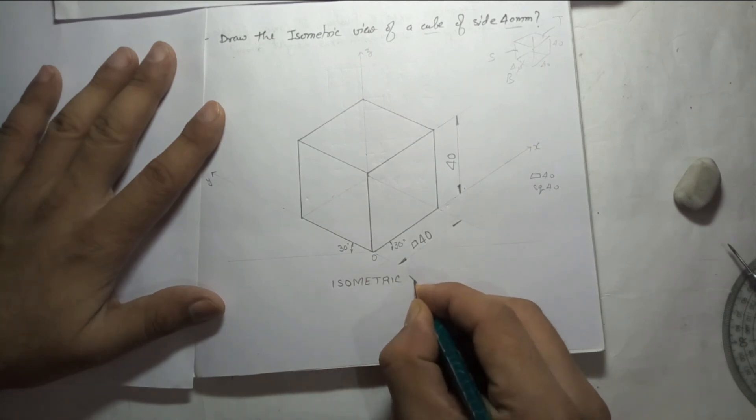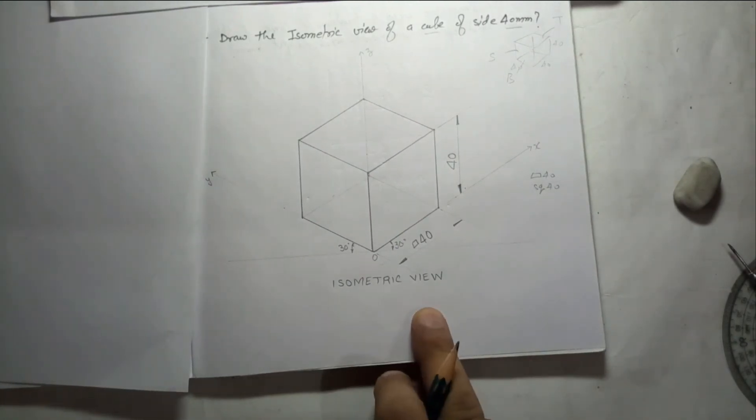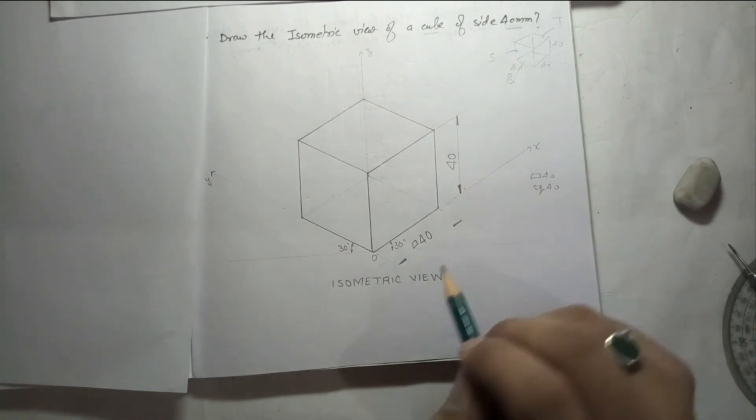This is isometric view. We can mention this because we have two things - isometric view or projection. You can mention this is a view. You have drawn the diagram with actual given dimensions.